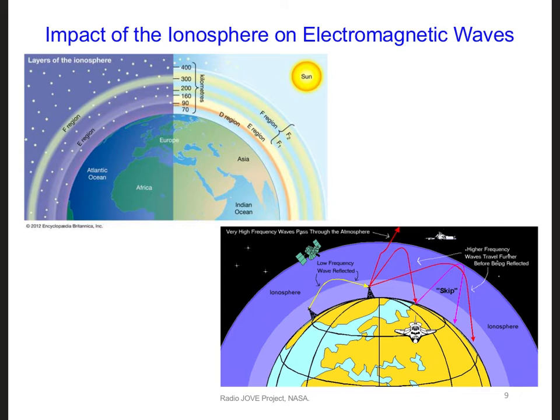At frequencies above about 30 megahertz, the electromagnetic waves can make it through the ionosphere into space, which is why communications between satellites and the ground operate around 1 gigahertz.